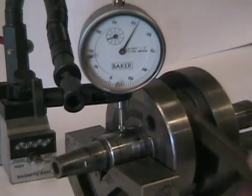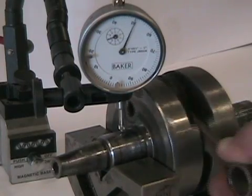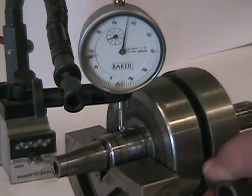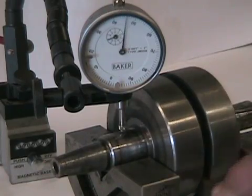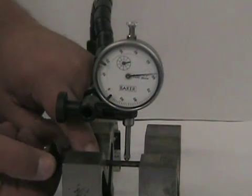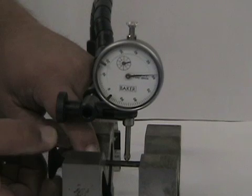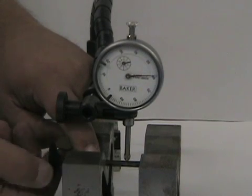The dial indicator is a useful tool that can be used to measure run out, piston position, bent shafts, valves, or brake rotor warpage. It is a simple and easy to use precision measuring tool that all mechanics must master.